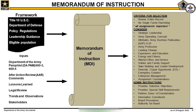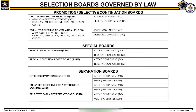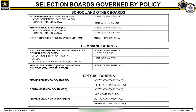We will now take a closer look at the various types of selection boards conducted at the DA Secretariat. The DA Secretariat executes over 90 centralized selection boards a year for the active and reserve components. The boards identified on this slide are governed by law, which include all promotion boards for Chief Warrant Officer 3 through Major General and Selective Continuation Boards. Special selection boards convene because of omission from the original board or to reconsider officers who were not selected based on a material error. Special selection review boards convene because of adverse information not considered by the original board.